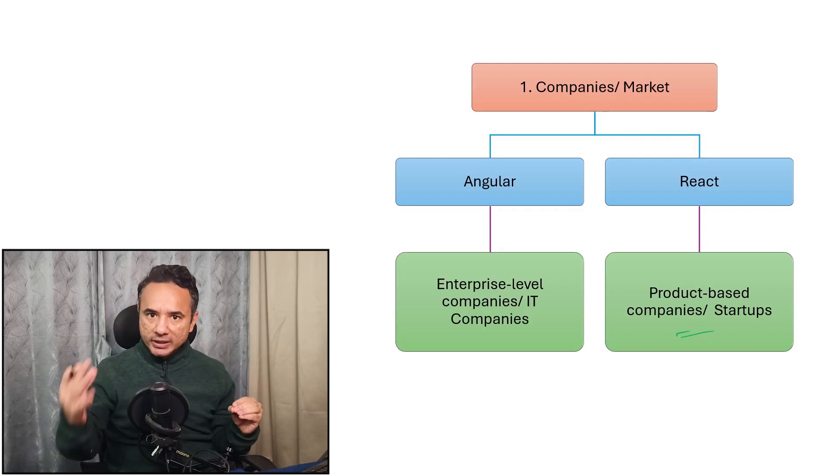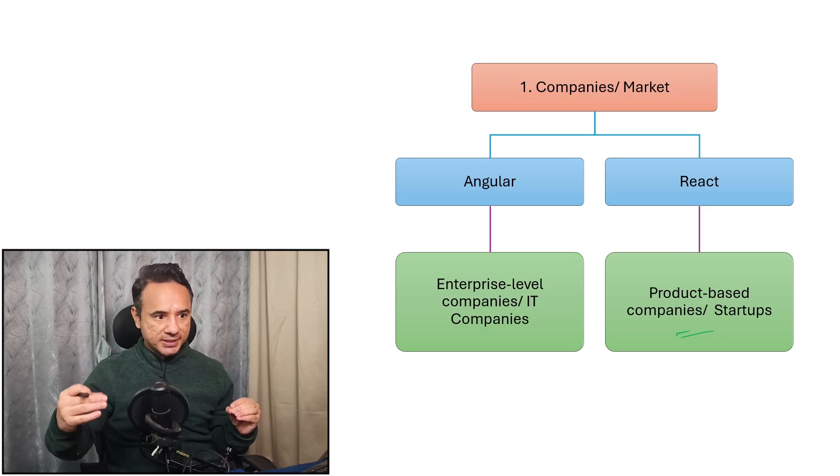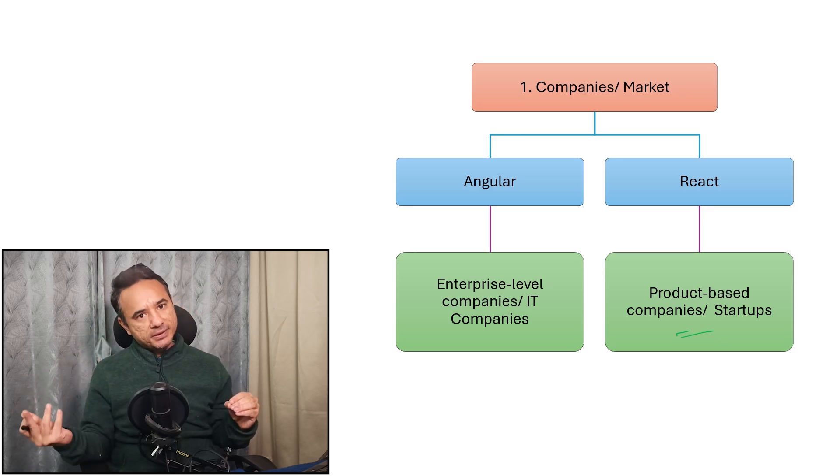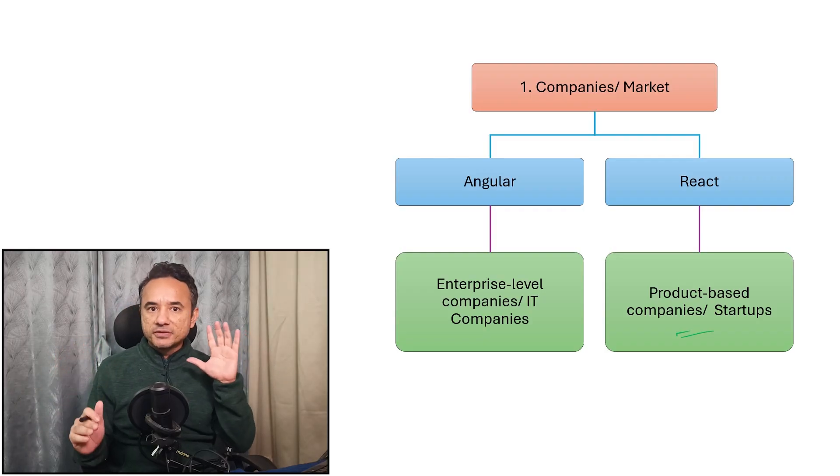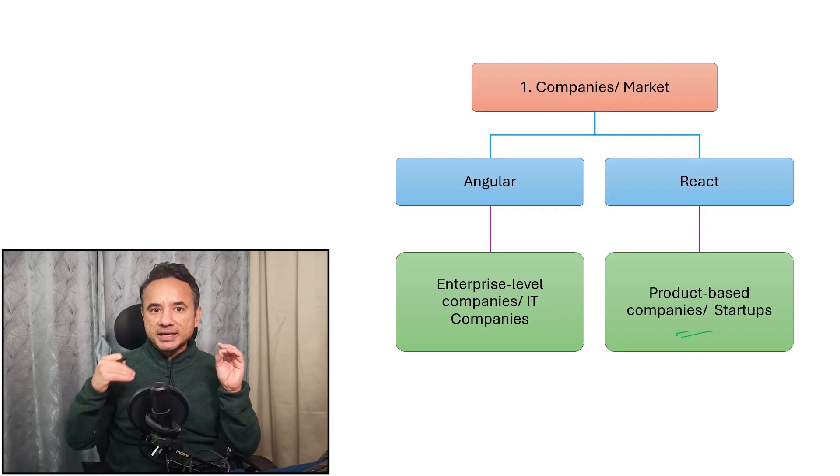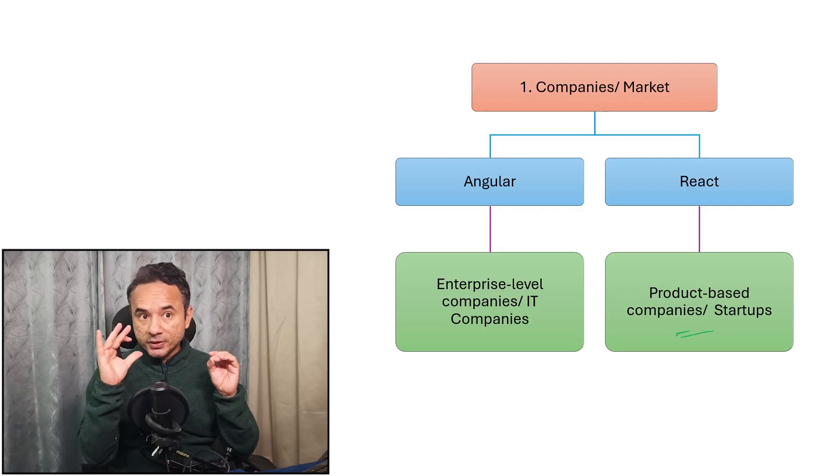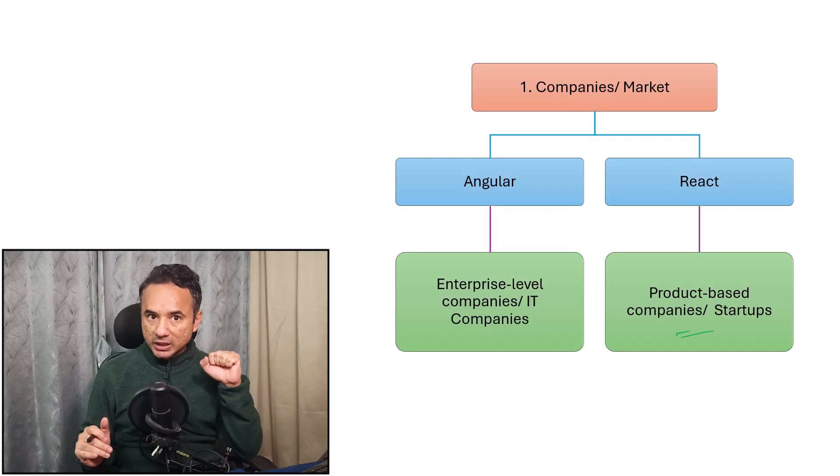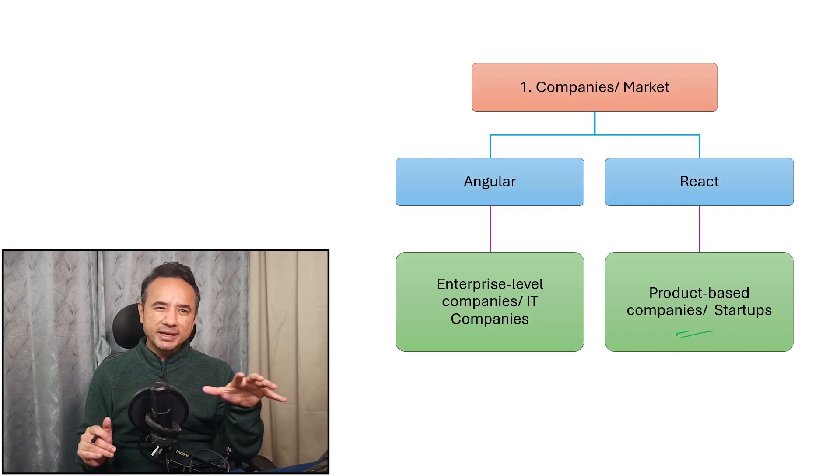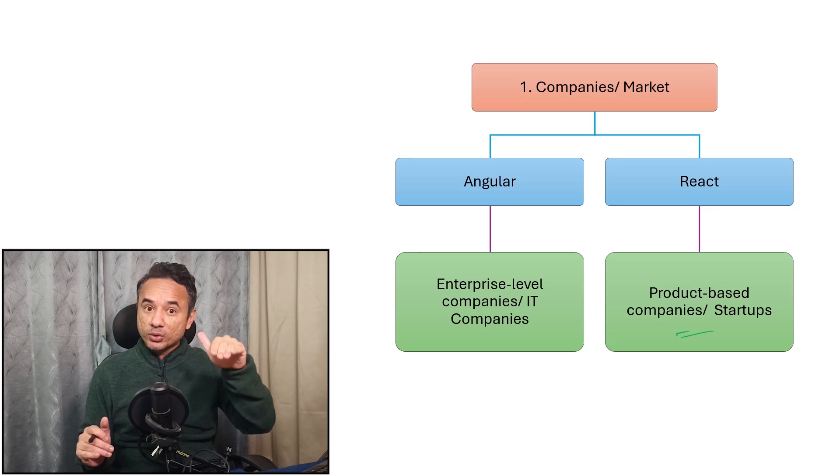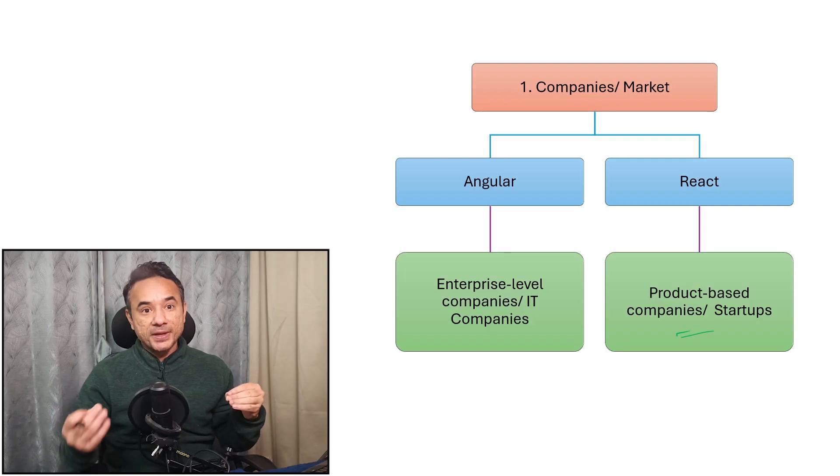Why is React more popular in product companies and startups? Because product-based companies love flexibility and speed. React is extremely flexible and fast. In React you can choose your own libraries, flexibility. You can choose your architecture, you can choose your patterns, applications. And React apps are considered fast. Startups love speed because generally their application users are common public.